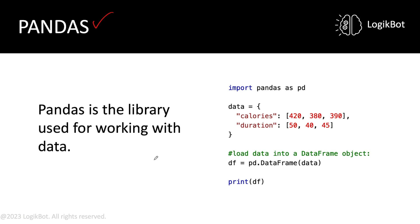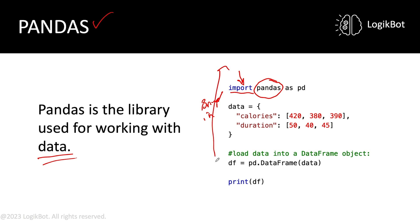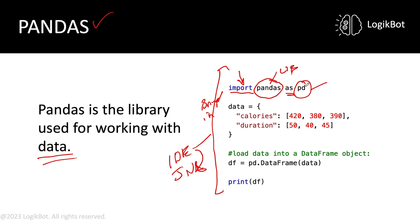Pandas is a library used for working with data. Let's look at the anatomy of the Pandas library. Here we're using 'import' — we're bringing in the functionality of Pandas so we can use it. We're bringing it into our environment, which is going to be a Jupyter notebook. That's what everyone uses. So 'import pandas as pd' — 'as pd' is just an alias, something we use later so we don't have to type out the entire library name every time we call it.